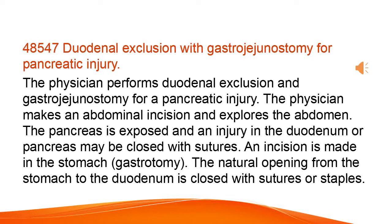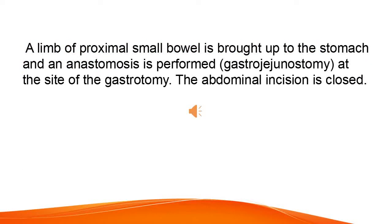An incision is made in the stomach — gastrotomy. The natural opening from the stomach to the duodenum is closed with sutures or staples. A limb of proximal small bowel is brought up to the stomach and an anastomosis is performed — gastrojejunostomy — at the site of the gastrotomy.